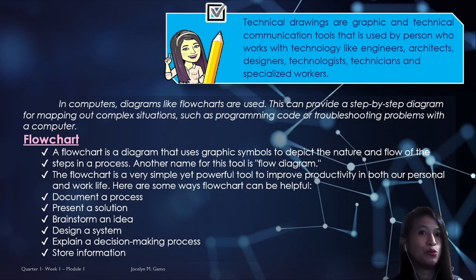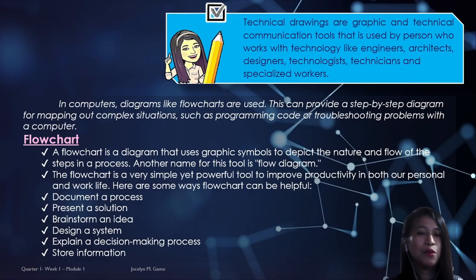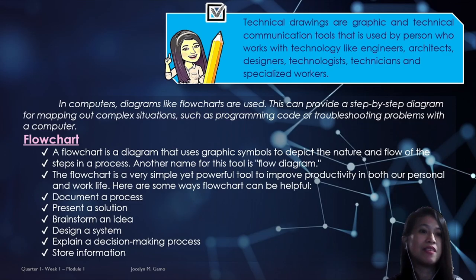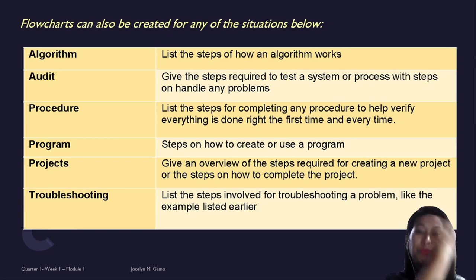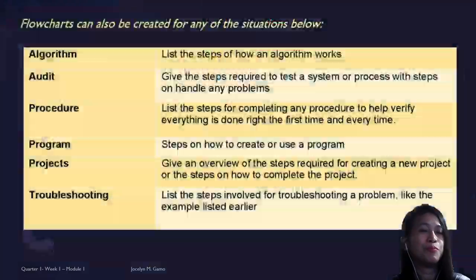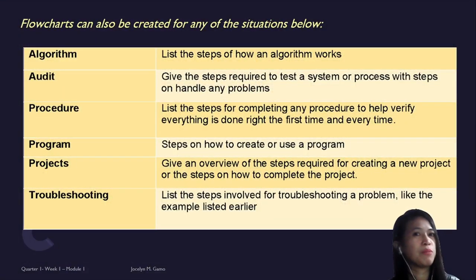Take note, we're just going to deal with flowcharts. A flowchart is a diagram that uses graphic symbols to depict the nature and flow of the steps in a process. A flowchart also shows a solution to a problem, and it will always show the documentation process — what are the different steps that we need to perform.